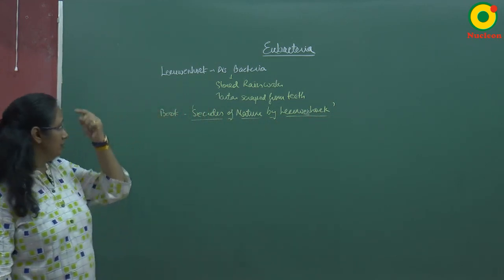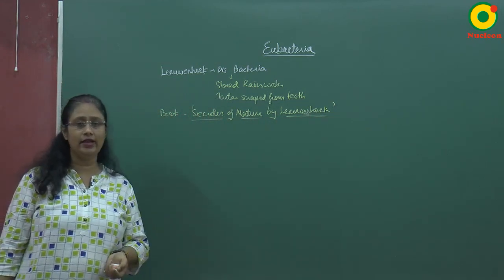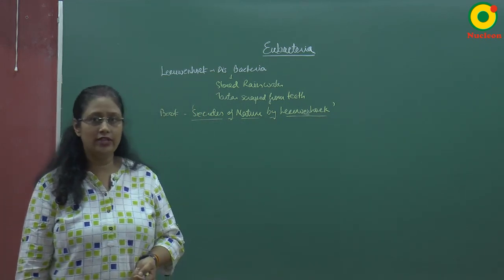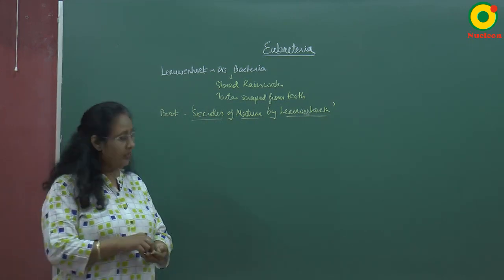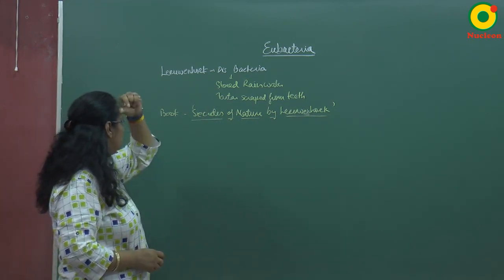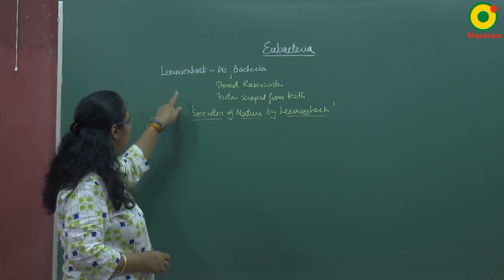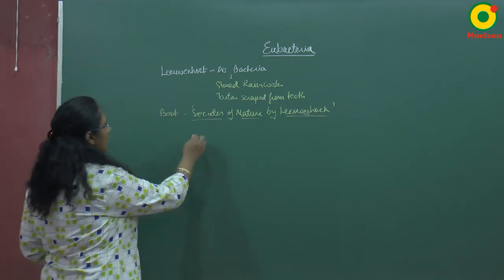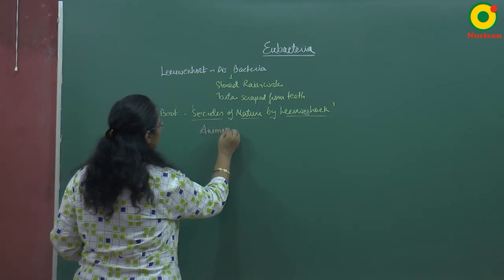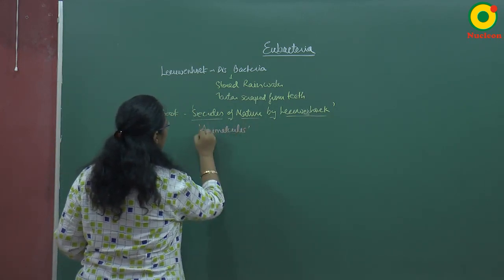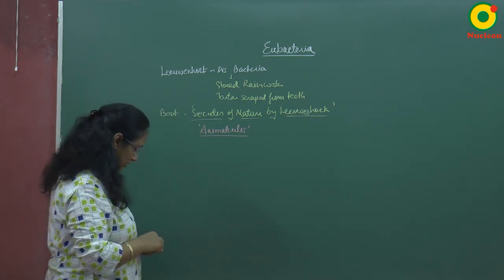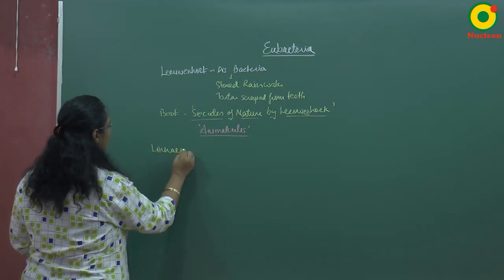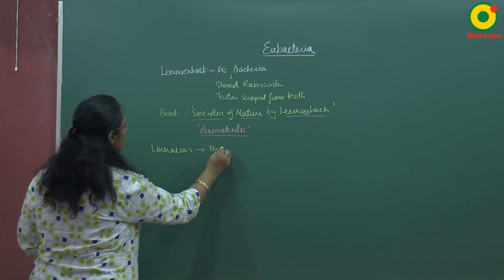He called those microorganisms bacteria, as they are very small in size and cannot be observed with the naked eye — we need a microscope. That is why they are known as microorganisms. Initially, Leeuwenhoek called them animalcules. Later, the popular scientist Linnaeus gave them the term 'vermis'.